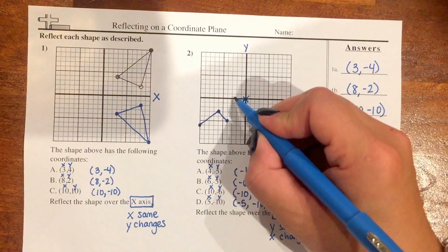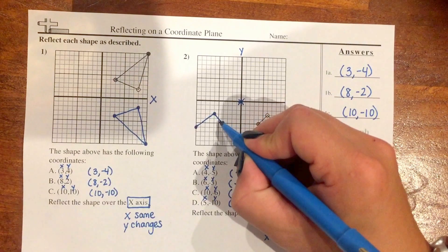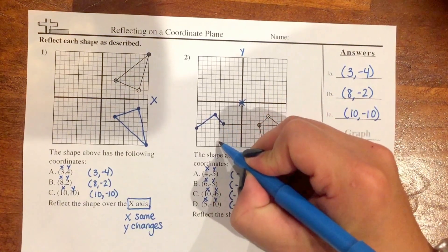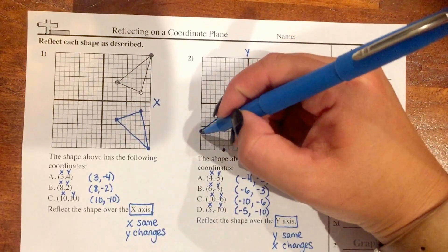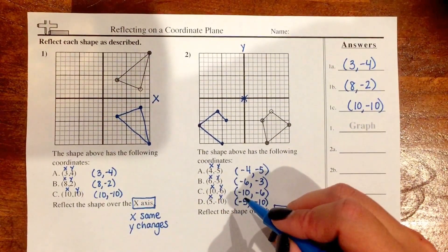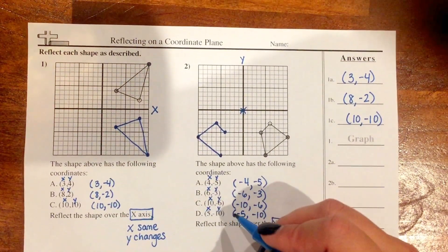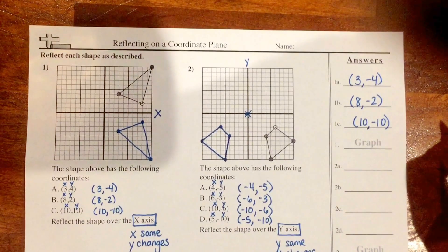So I'm going to graph that. 1, 2, 3, 4, 5, and 1, 2, 3, 4, 5, 6, 7, 8, 9, -10. I'm going to graph it from my previous point. And since I have no more points in my original shape, I'm going to connect and close up my shape.